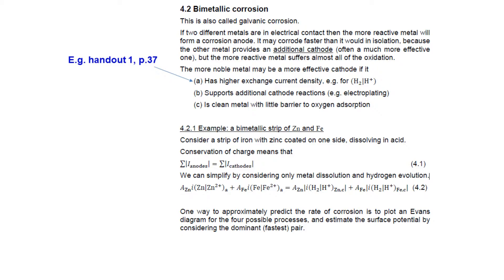For example, platinum has a high exchange current density for the proton reaction, so connecting platinum to a similar area of dissolving iron will make the iron dissolve faster. The more noble metal might also support additional cathode reactions — for example, electroplating. A piece of copper metal in a copper sulphate solution can have quite a large amount of copper plating cathode reaction, which drives faster anodic dissolution of another connected metal, such as aluminium.